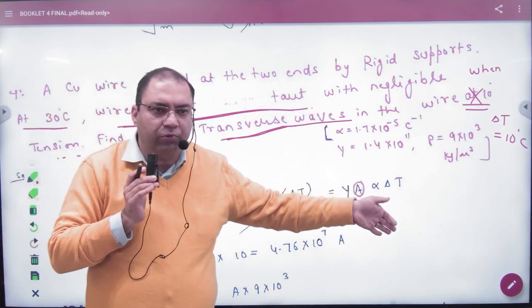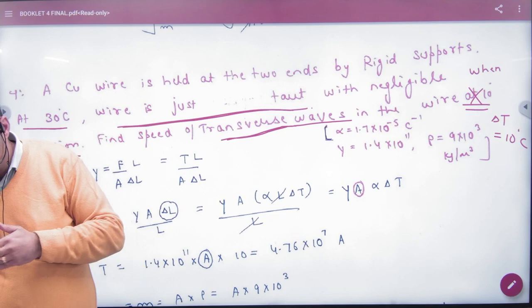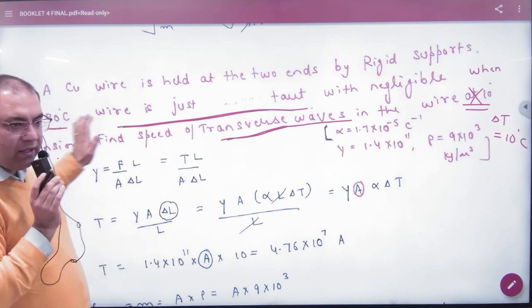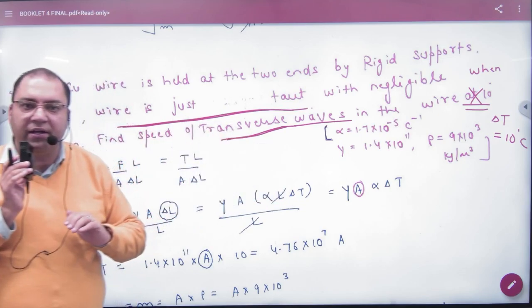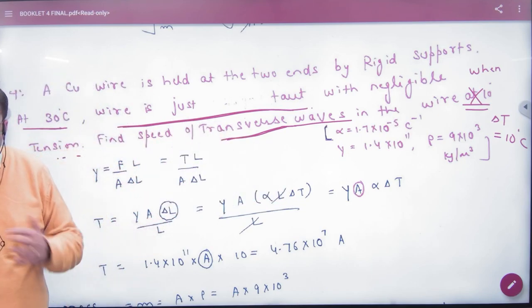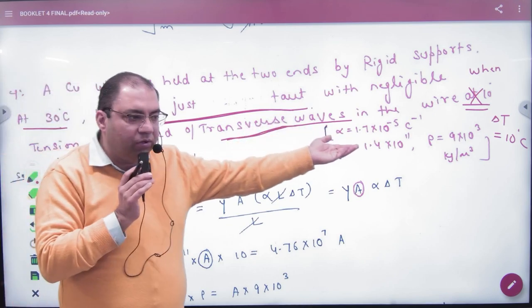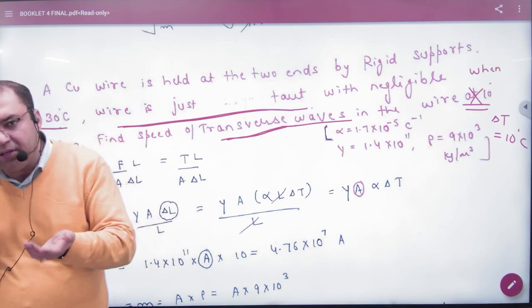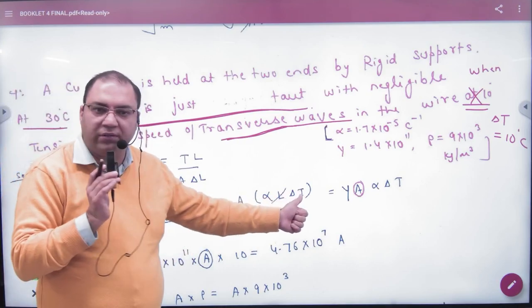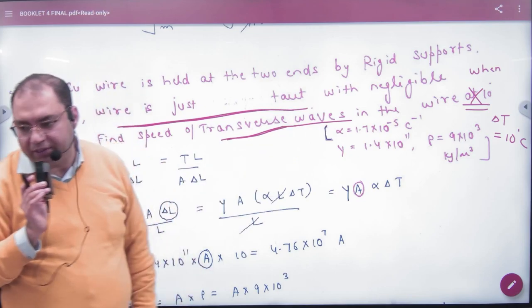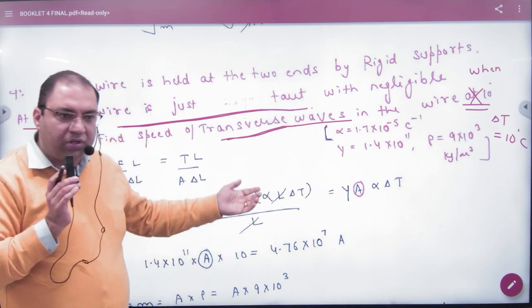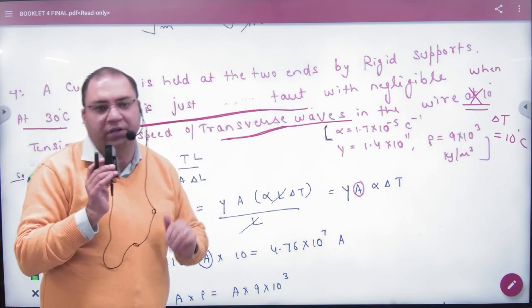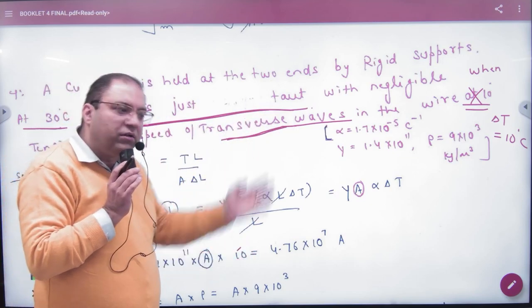Kitne temperature pe: 30 degree celsius pe wire is just taut with negligible tension. Koi tension nahi. Decreases by 10 degree celsius. Seedha likhun: delta T given hai. Agar mein delta T likhta hun to seedha delta T 10 hi hai. Maine statement change karwa diya, aur agar yeh wala solution yehi rakhna hai, means statement yehi rakhna hai, phir delta T ko 30 mein se 10 gaya 20 put karayega. Ab solution lamba sa change karna, to delta T karwa diya.